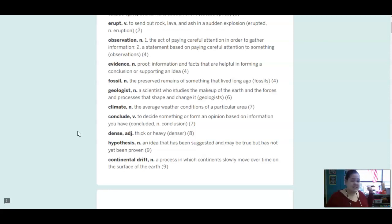Climate is a noun, and climate is different than weather, because climate is the average weather in an area. So, for example, right now it is sunny outside, but in Syracuse, the climate for wintertime would be cold and snowy. Conclude is a verb, and that is when you decide on something based on information. Dense is an adjective, and that means thick or heavy.